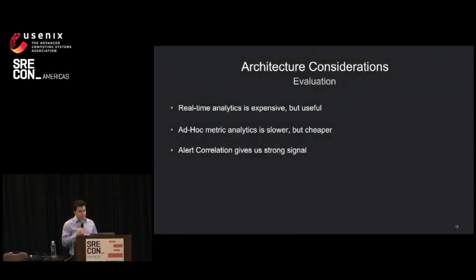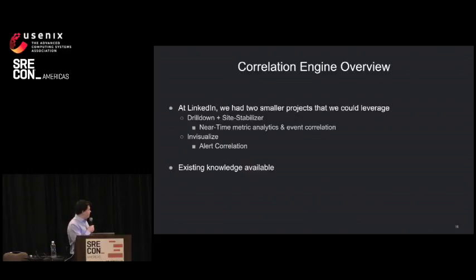Just summarizing this: real-time analytics is expensive, but useful. Ad hoc metrics analytics are slower, but it's cheaper to implement. And alert correlation gives us a good signal. So where do we go from here?